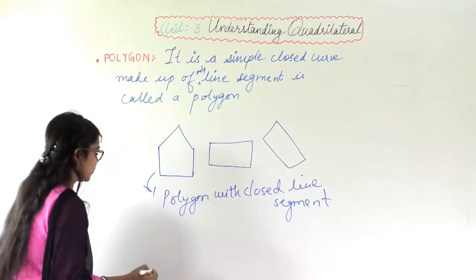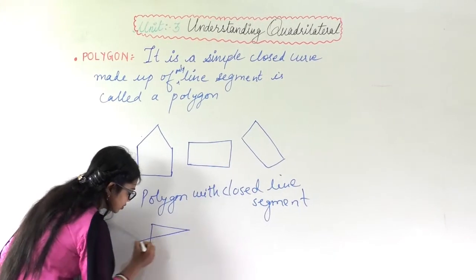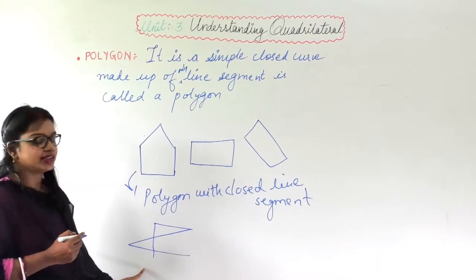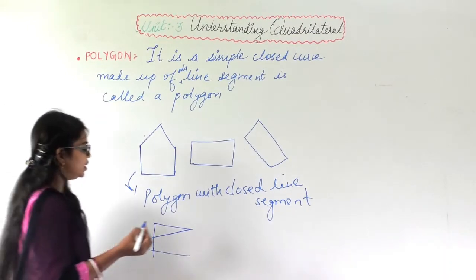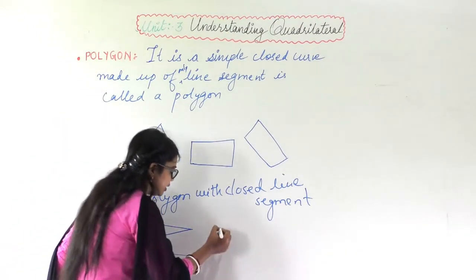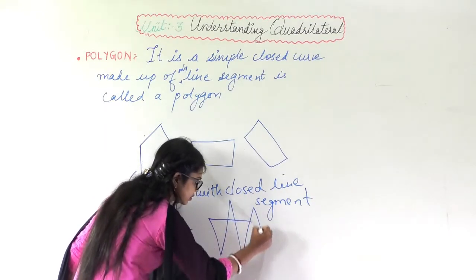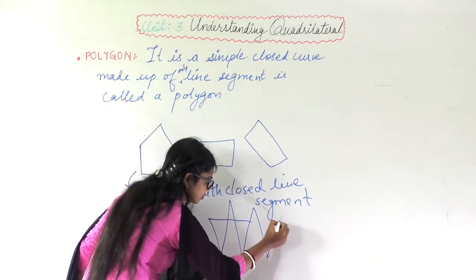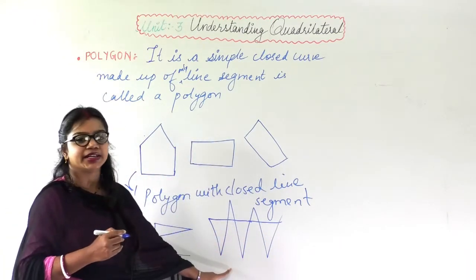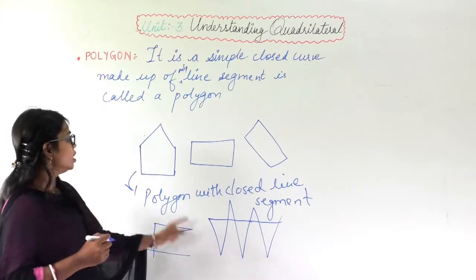If I make a figure like this — these are made up of line segments, but these are not a closed curve, so this will not be a polygon. Similarly, if I make another open figure, it is made up of line segments but it is not closed, so this will not be a polygon either.